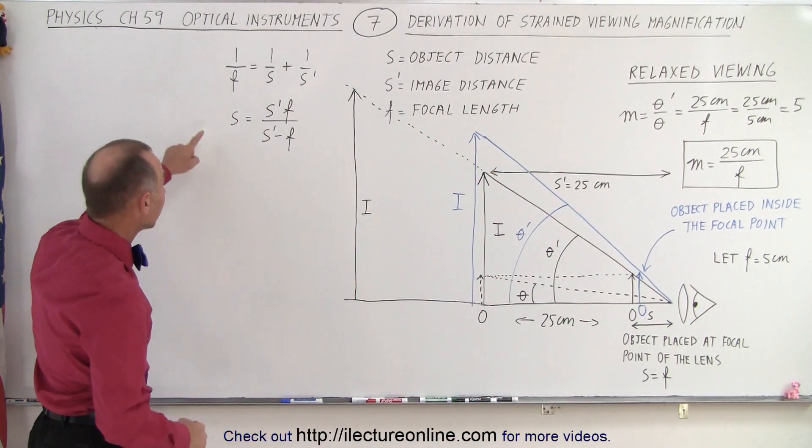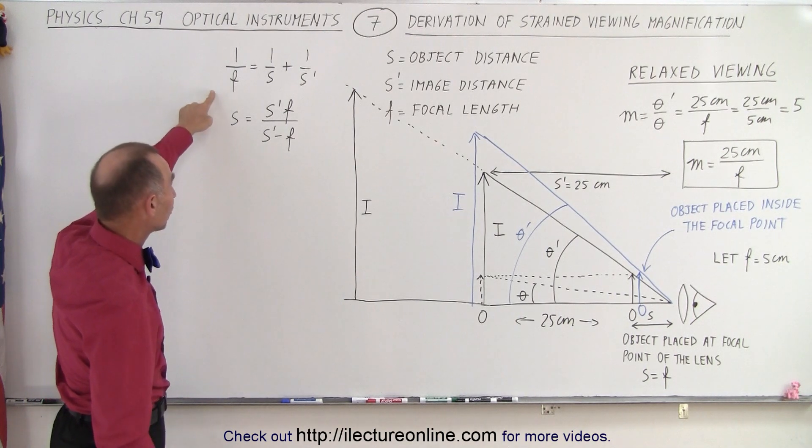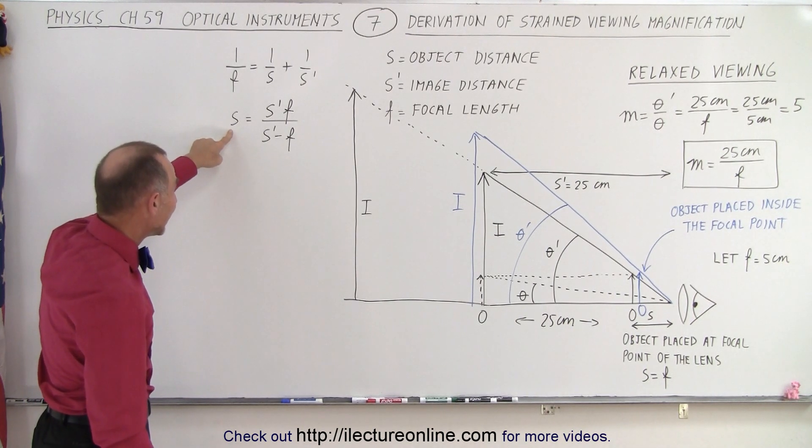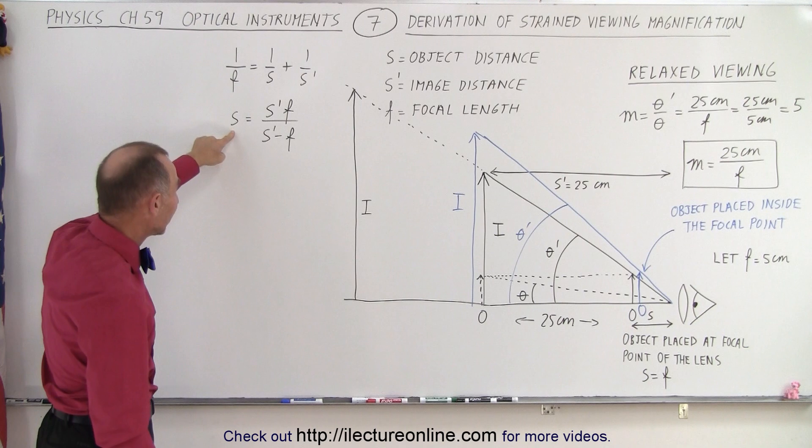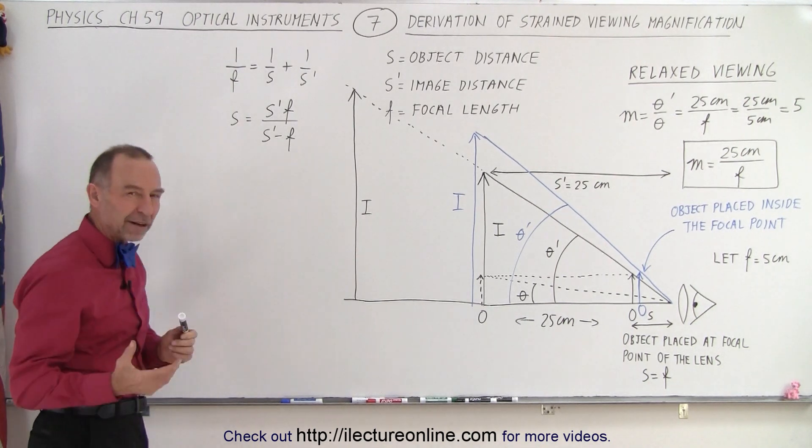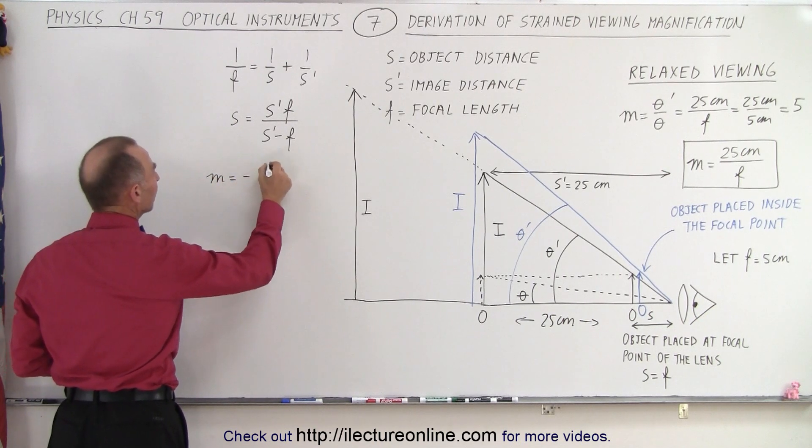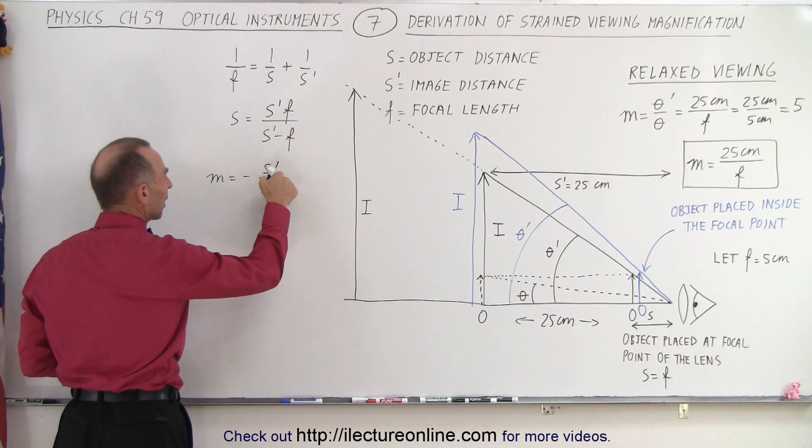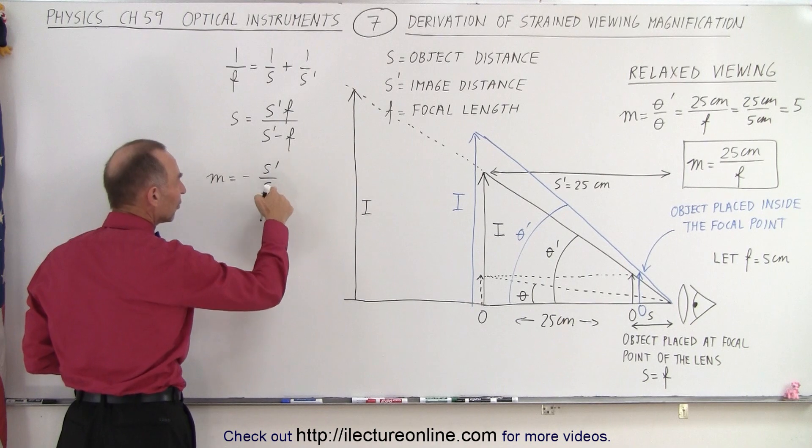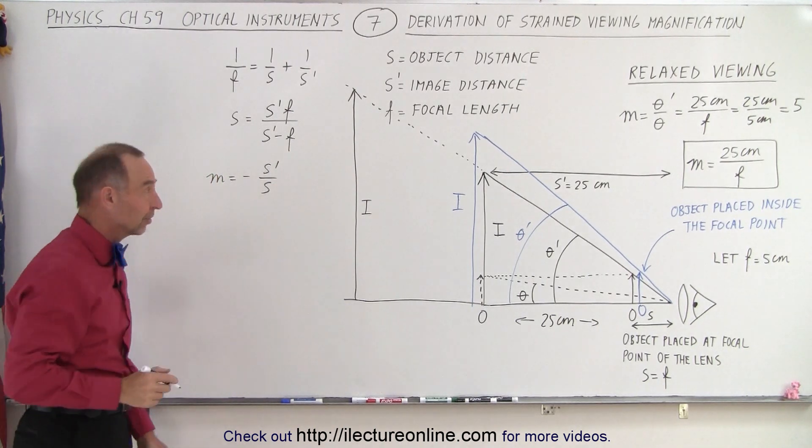So what we can do is we can again start with the same equation, the lens equation, solve for the image distance, or in this case the object distance, and then we can plug that into the magnification equation. The magnification is equal to minus S prime over S, S prime being the image distance, and S being the object distance.